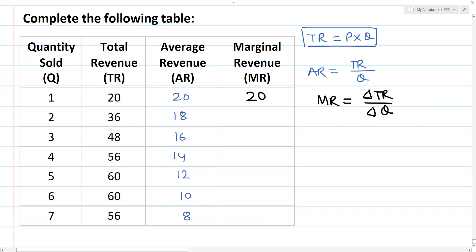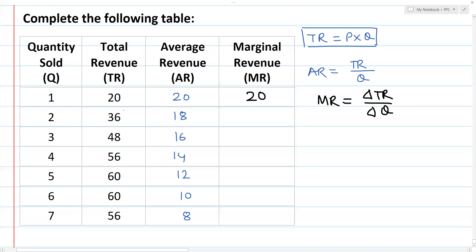Marginal revenue for 20 units: change in TR divided by change in quantity. Delta TR means 16, and the change in quantity is 1. So 16 divided by 1 is equal to 16.